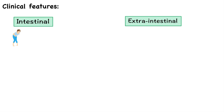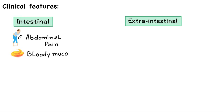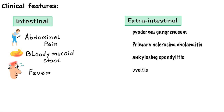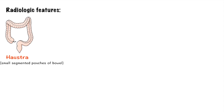Clinical features include intermittent attacks of abdominal pain, bloody mucoid stool, and fever. Extra-intestinal manifestations include pyoderma gangrenosum, primary sclerosing cholangitis, ankylosing spondylitis, and uveitis.